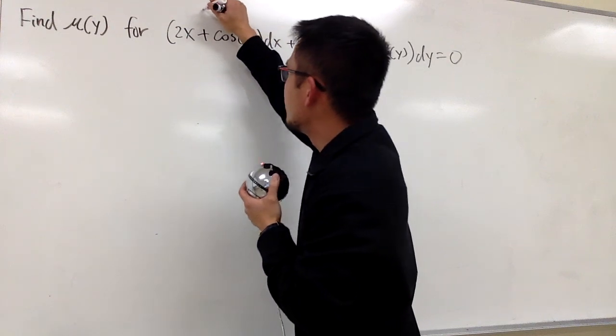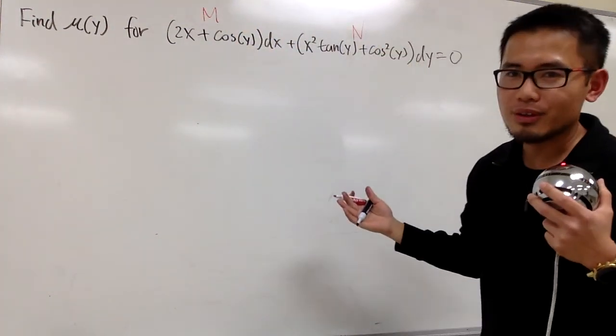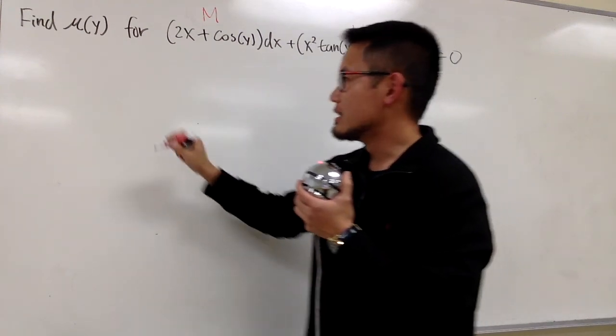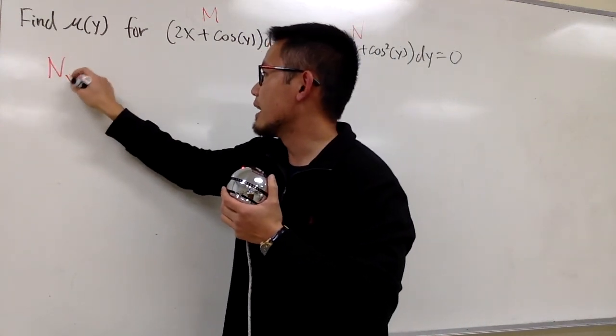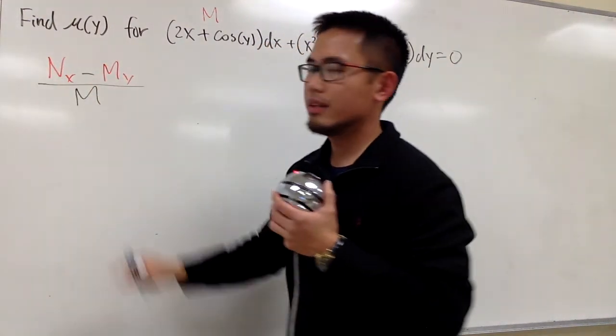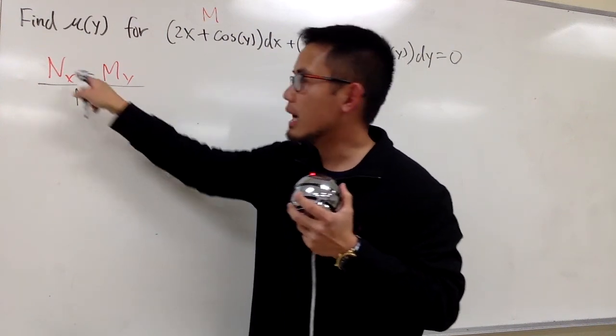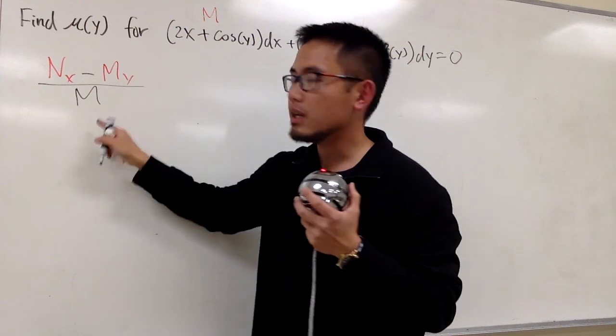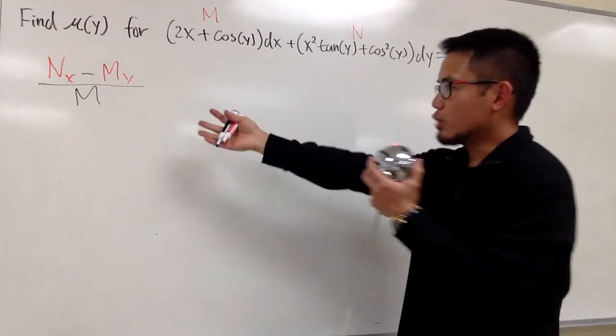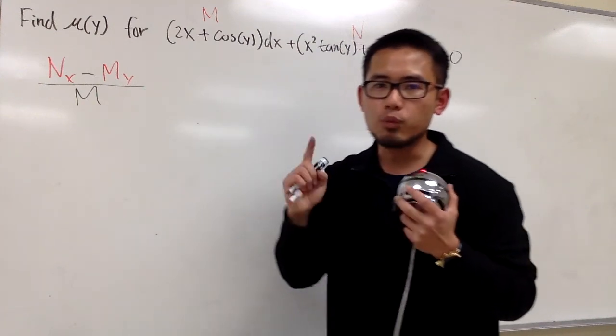Let's go ahead right here, label M, and we'll label this as N, and of course we have to know the formula. Let's focus on getting the N sub x minus M sub y, and then over M, the original M. Keep in mind, on the top are the partial derivatives, on the bottom are the original. So let's try to figure that out first, and hopefully this right here is an expression in terms of y only.